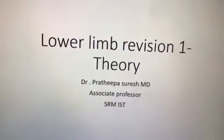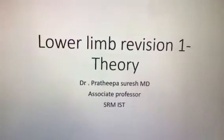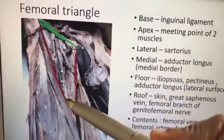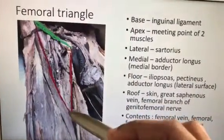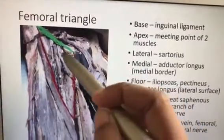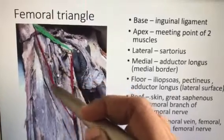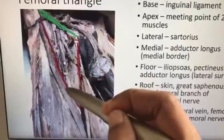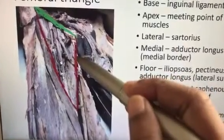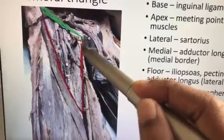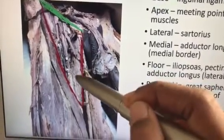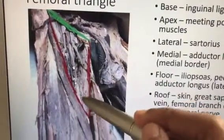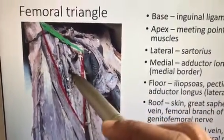Let us start revision of the lower limb. The commonly asked question is the femoral triangle. Keep this picture in mind — this is a real cadaveric picture. The base is formed by the inguinal ligament. The lateral boundary is the medial border of sartorius — students should specify which border. The medial boundary is the medial border of adductor longus. The apex is the meeting point of these two.